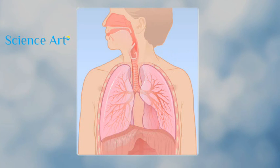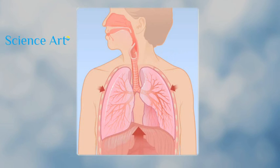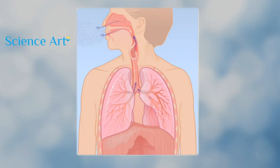Exhalation occurs when your diaphragm and ribcage muscles relax to make the chest cavity smaller. Air rich in carbon dioxide is forced out of the lungs and through the nose and mouth. The lungs are now prepared for another breathing cycle.